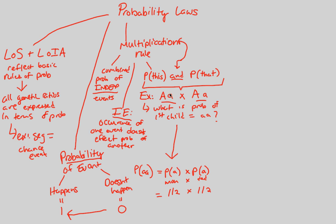Mom has a half chance of donating a lowercase allele — one gamete might get the capital A, and the other gets the lowercase a. Dad has the same situation. Because we're using the term 'and,' we multiply: one-half times one-half gives us a final probability of one-fourth for a homozygous recessive offspring. Be comfortable practicing questions like this — it's important as we talk about probability laws and look at genetic problems.